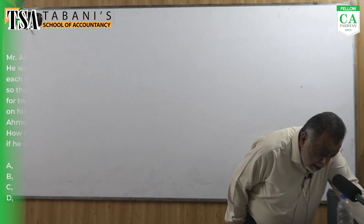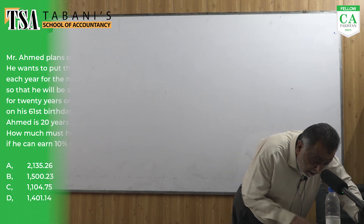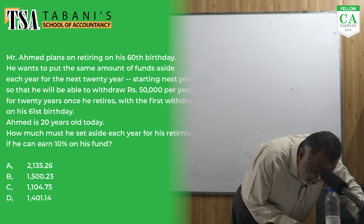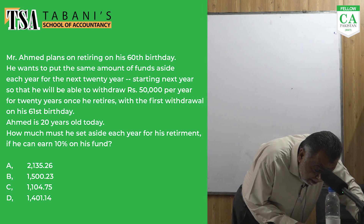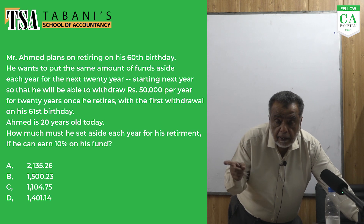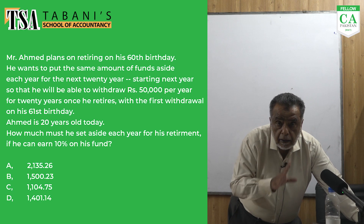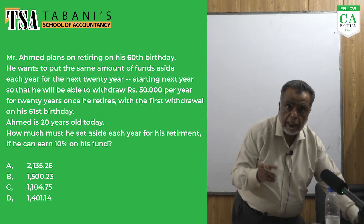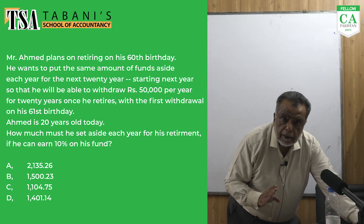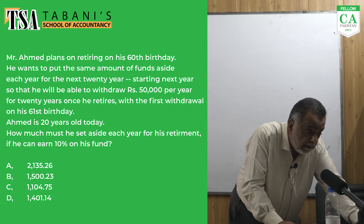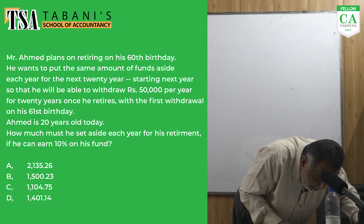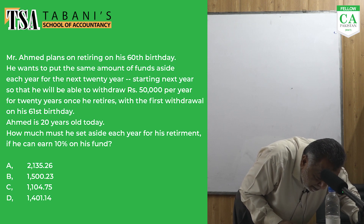I am going to start now. Mr. Ahmed plans on retiring on his 60th birthday. He wants to put the same amount of fund aside each year for the next 20 years, starting next year. That means it's ordinary annuity, not due. He is accumulating a fund in order to withdraw rupees 50,000 per year for 20 years.